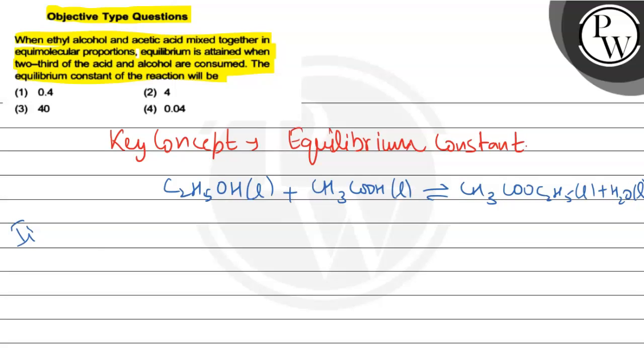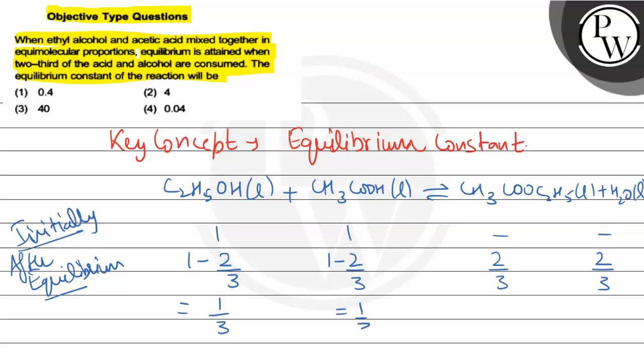Initially, the reactants will be 1 and 1, and the products were not formed. After equilibrium, the question states that 2/3 is consumed. That means 1 minus 2/3 for each reactant, which equals 1/3. The products will be 2/3 each. So we have 1/3 for each reactant and 2/3 for each product, because 2/3 was consumed on the reactant side and 2/3 was formed on the product side.